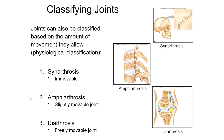The other way to classify joints is based on their physiology — basically, how much movement they are capable of. Some joints in the body don't move at all. Most joints that people are familiar with freely move and fall into the category of diarthrosis. But first, synarthrotic joints, or synarthrosis, are joints that are immovable.